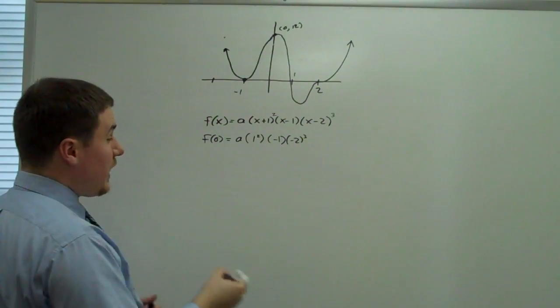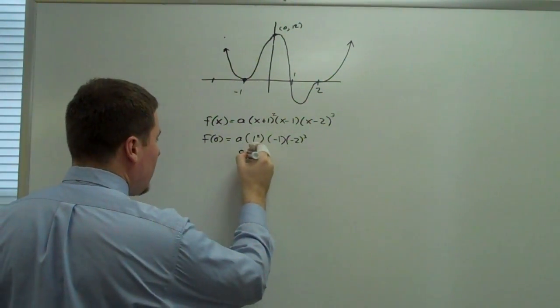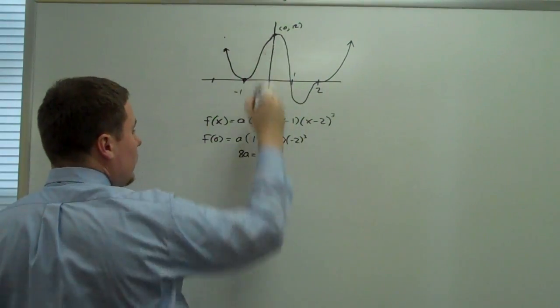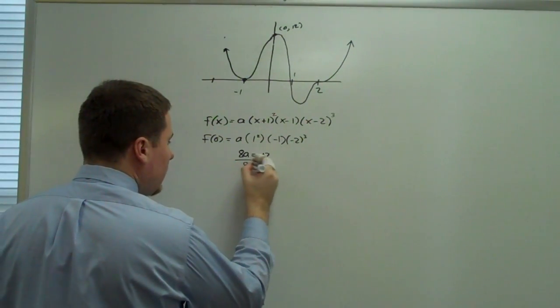So times negative 1 is positive 8. So I'm going to get 8a, and that equals 12. So I divide by 8.